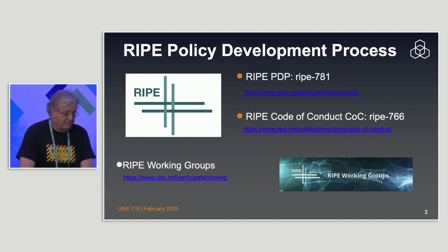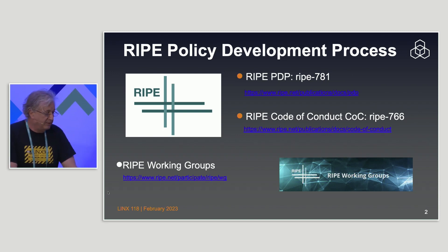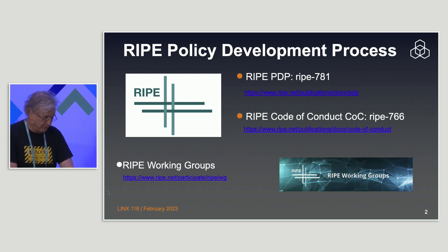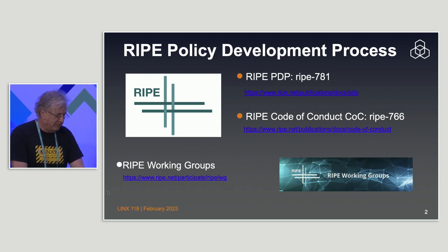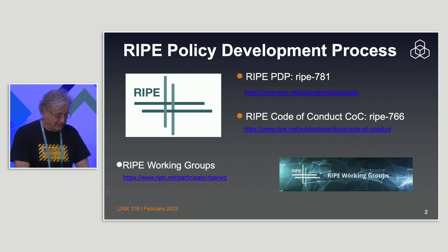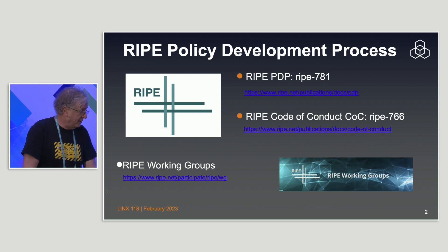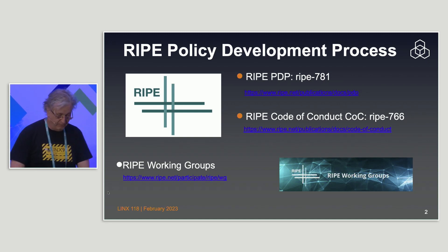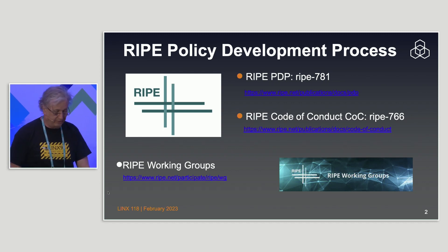Background information: RIPE policy is run by the RIPE Policy Development Process, known as the PDP. This has been slightly updated recently but not very much. There's also a RIPE Code of Conduct, which is about not shouting at people on mailing lists, and RIPE working groups are what actually come up with the policies.